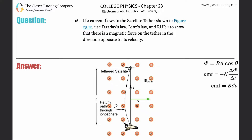Number 16: if a current flows in the satellite tether shown in figure 23.21, use the right-hand rule to show the magnetic force on the tether. Let's take a look. The current is going up and the velocity is moving to the right.